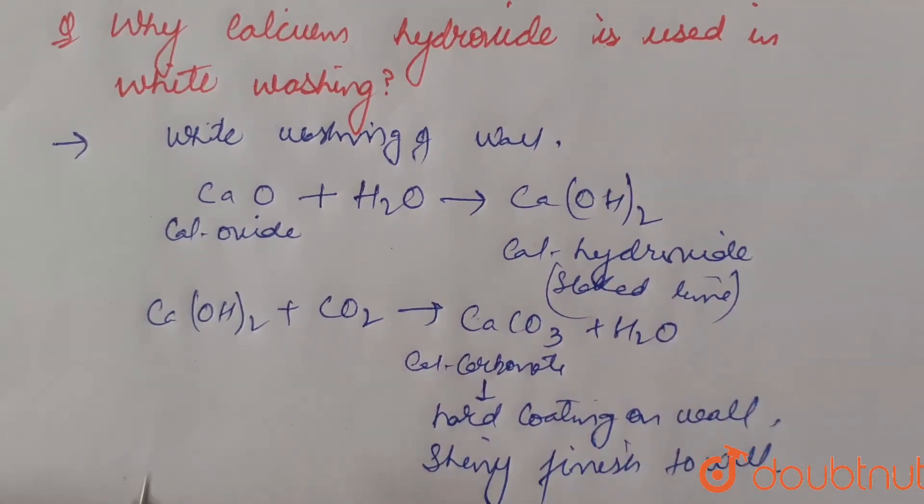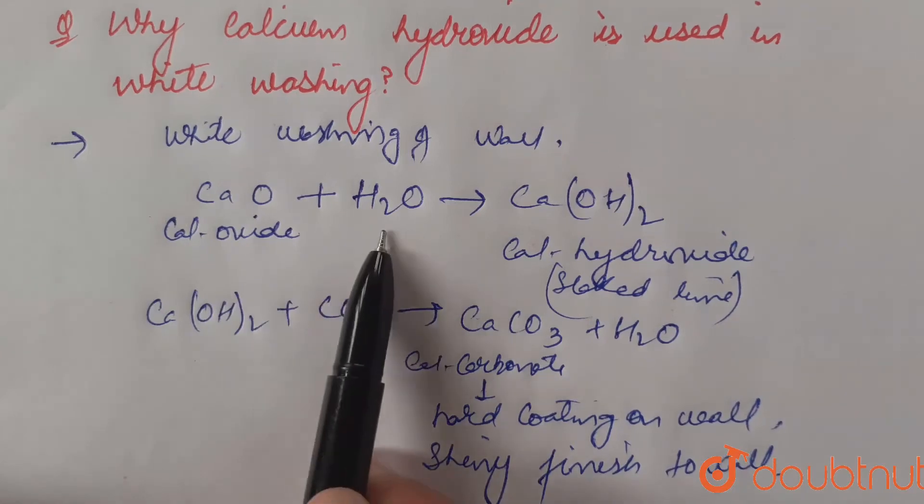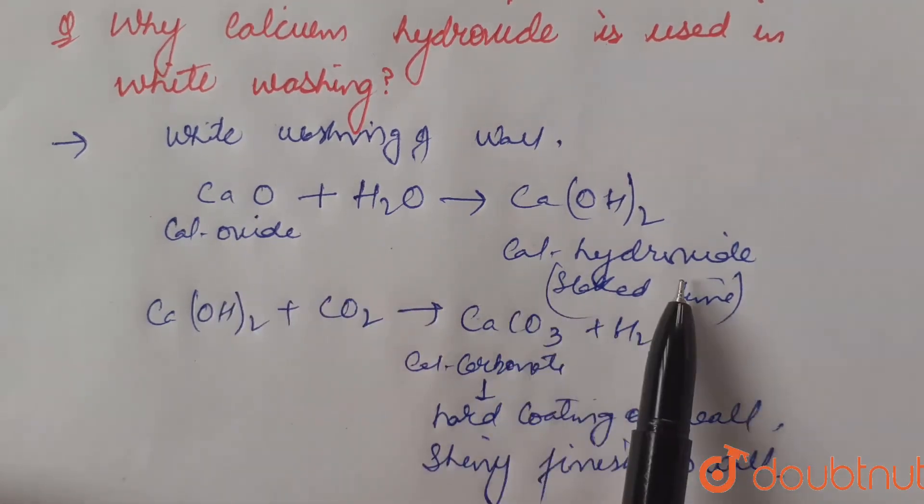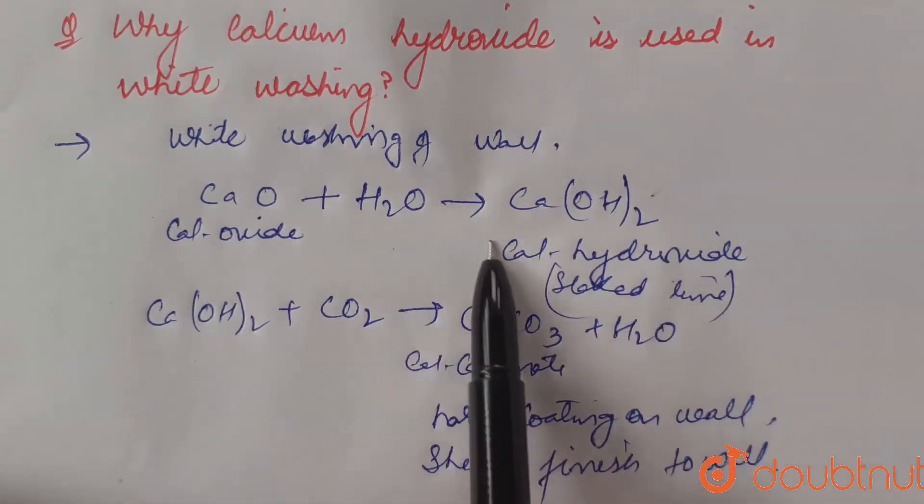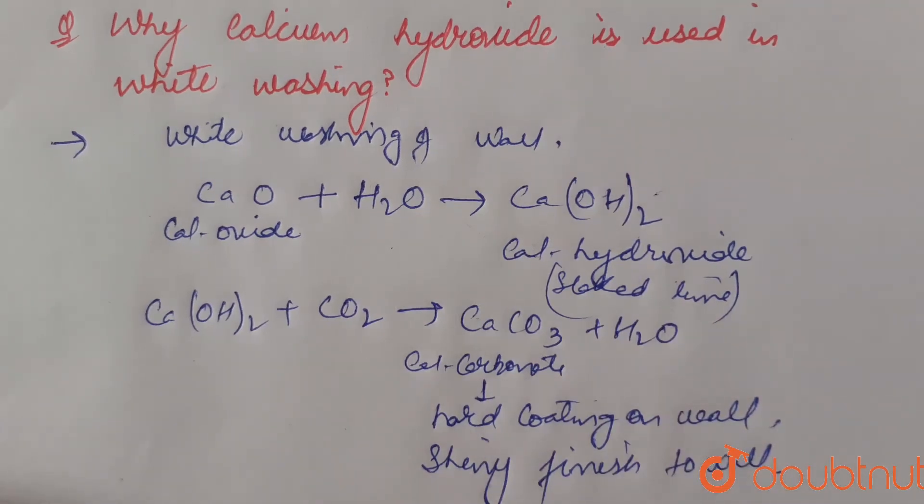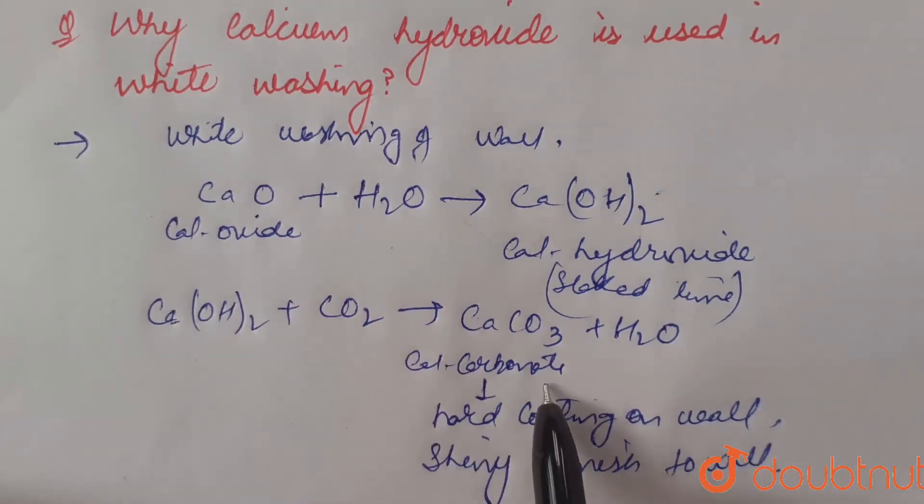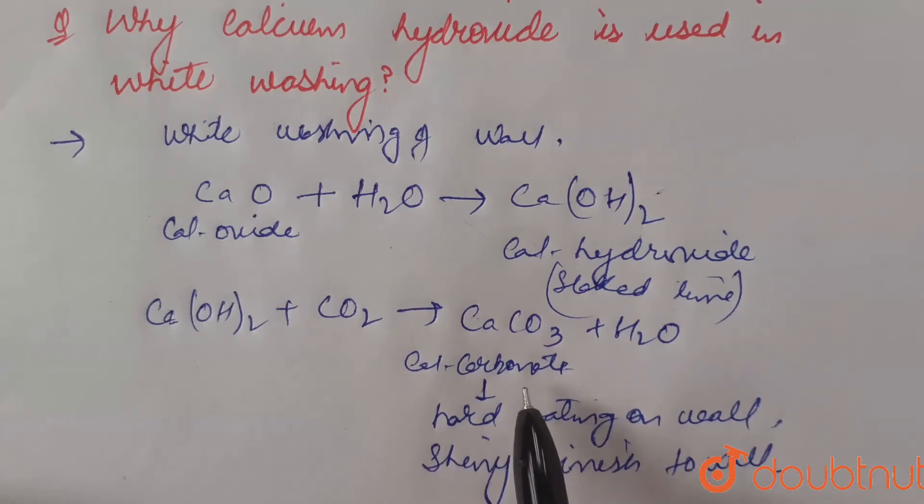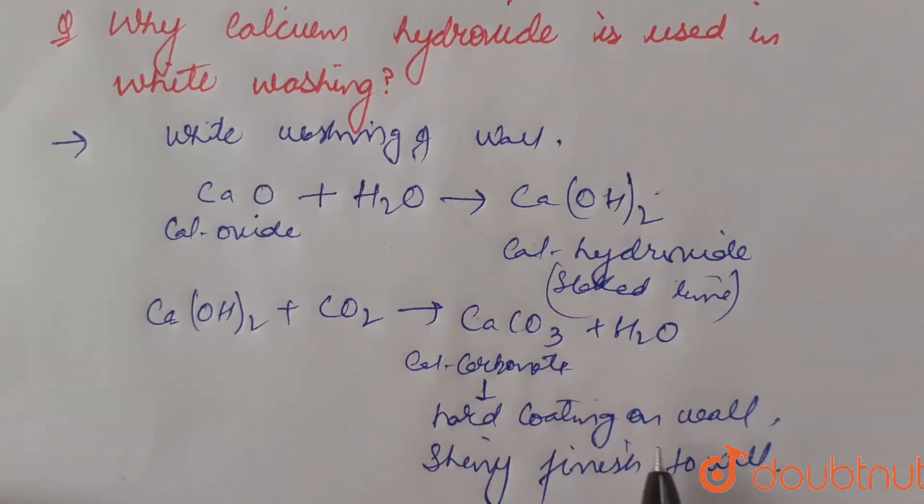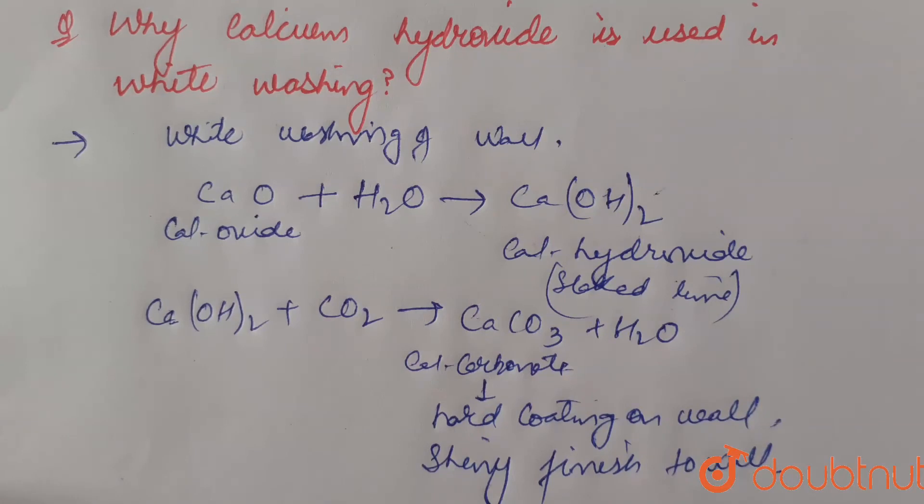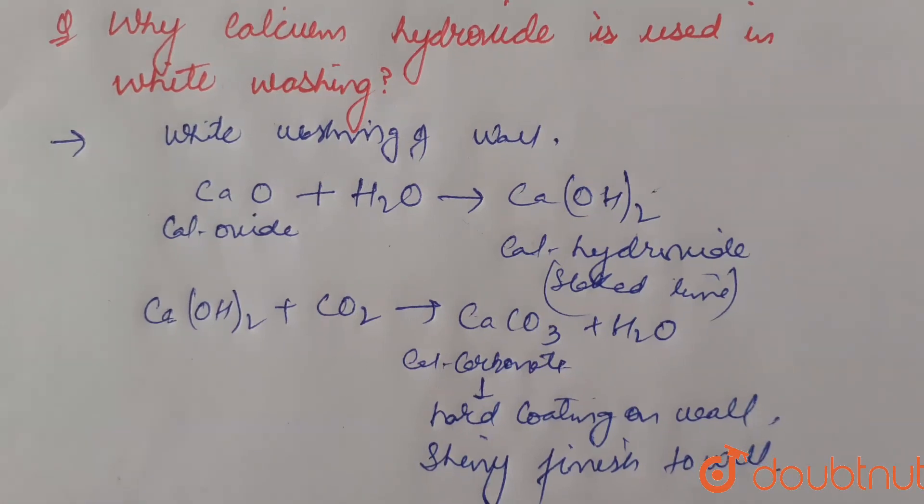Thus during the whitewashing, calcium oxide is made initially to react with the water and they form calcium hydroxide. Then this calcium hydroxide is applied on the walls, and on the walls calcium hydroxide reacts with the carbon dioxide present in the air and they form calcium carbonate and water. Then this calcium carbonate forms hard coating on the wall and also gives shiny finish to the wall. That's why calcium hydroxide is used in white washing. Thank you.